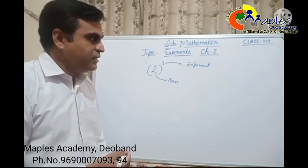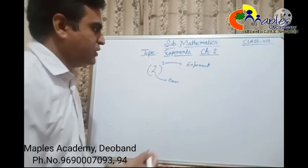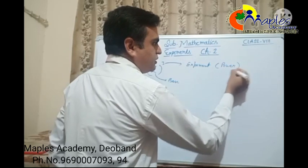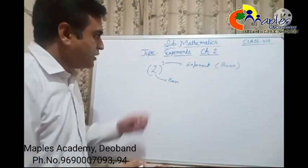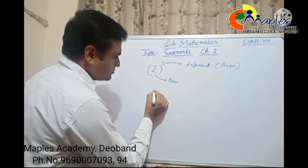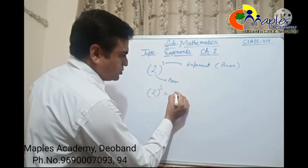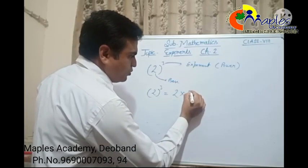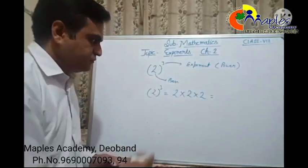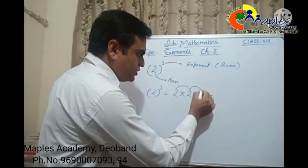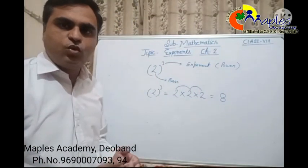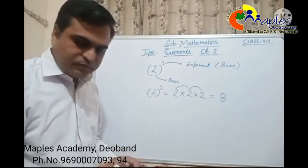3 is known as the exponent. We also call the exponent as power — that is another word used for exponent. 2 raise to the power 3 means 2 multiplied by 2 multiplied by 2. When we multiply: 2 to 4, 4 to 8 — the value of 2 raise to the power 3, that is 2 whole cube, equals 8.